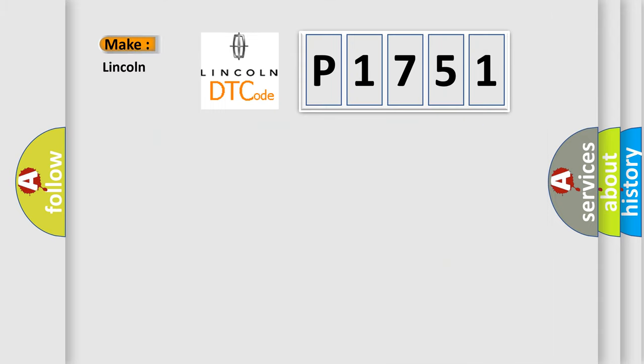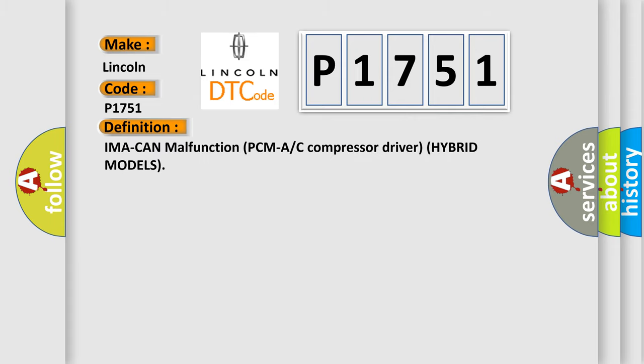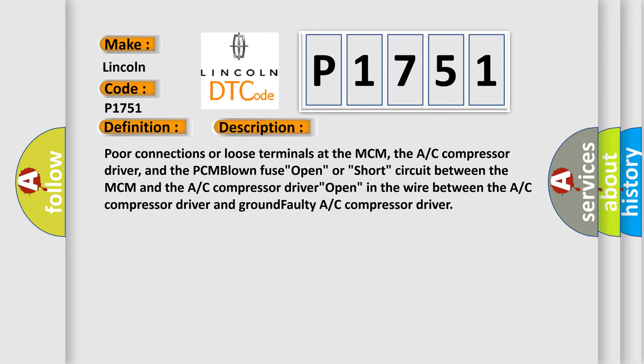So, what does the diagnostic trouble code P1751 interpret specifically for Lincoln car manufacturers? The basic definition is: IMA can malfunction — PCM AC compressor driver, hybrid models. This is a short description of this DTC code: poor connections or loose terminals at the MCM, the AC compressor driver, and the PCM; blown fuse; open or short circuit between the MCM and the AC compressor driver; open wire between the AC compressor driver and ground; faulty AC compressor driver.